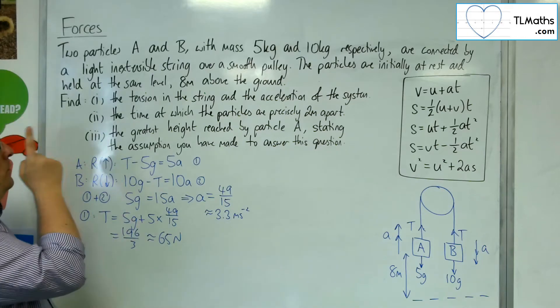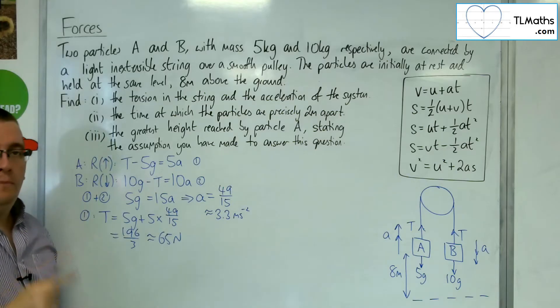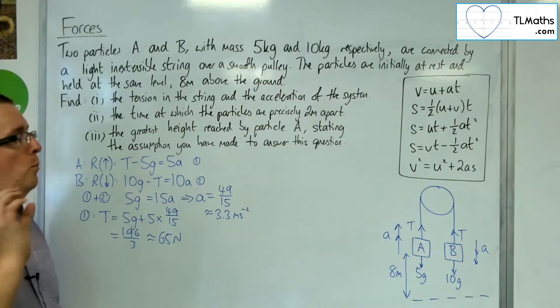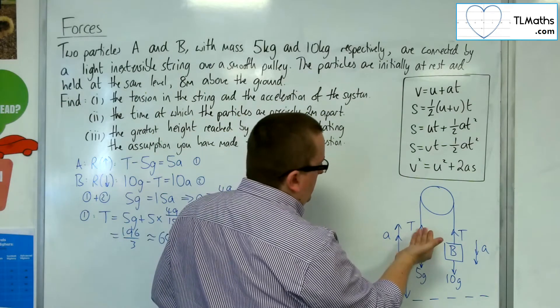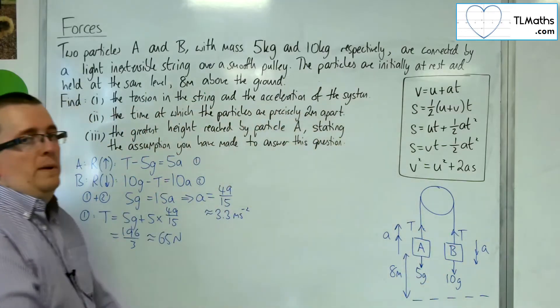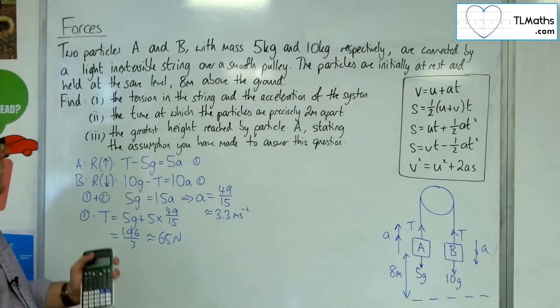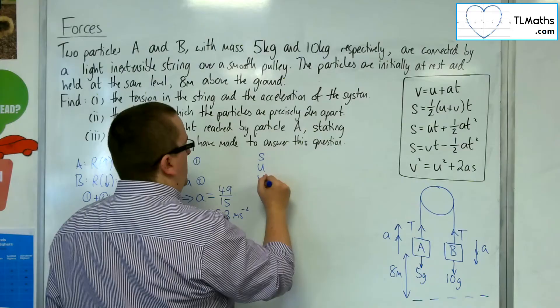Okay, now the time at which the particles are precisely 2 meters apart. Now, in order for that to happen, what must have happened is that particle A must have travelled up 1 meter, and particle B must have travelled down 1 meter in order for them to be 2 meters apart. Okay, so, what we can do is, if we set up a SUVAT equation here, SUVAT problem,